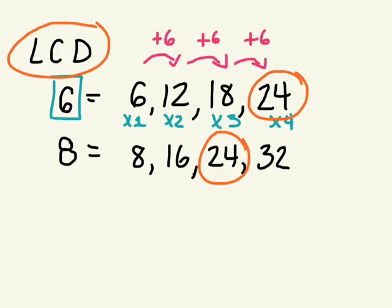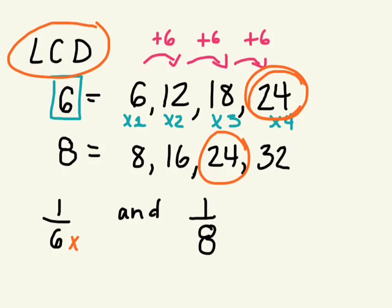So if my two fractions are, let's do 1/6 and 1/8. We just found that the lowest common multiple is 24. What do I multiply 6 by to get 24? What do we have to multiply by? So what do we need to do with the numerator? Multiply by 4.